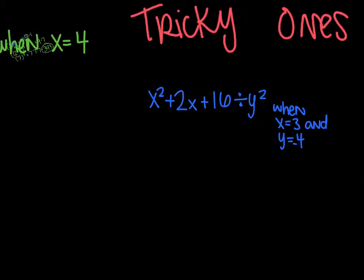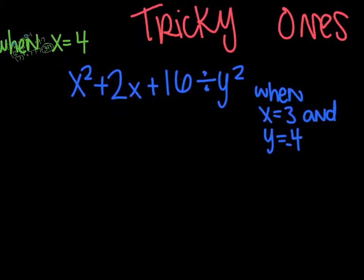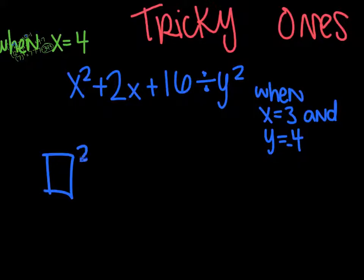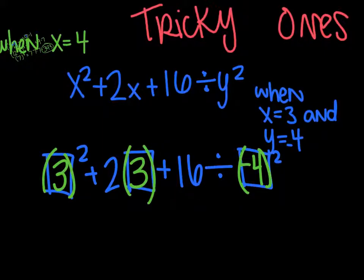Alright, next tricky one. This one's just a little bit longer and has multiple exponents, but that's okay. x squared plus 2x plus 16 divided by y squared when x is 3 and y is 4. Again, rewrite the problem. Include your little boxes. Just helps keep things in the right spots. And then plug in, let's see, x is 3. So anywhere I see an x, I'm going to put a 3. And anywhere I see a y, I'm putting negative 4. Sorry, I missed the sign. So negative 4 goes in the box there. And I'm going to put this in parentheses. It's better to be safe than sorry.